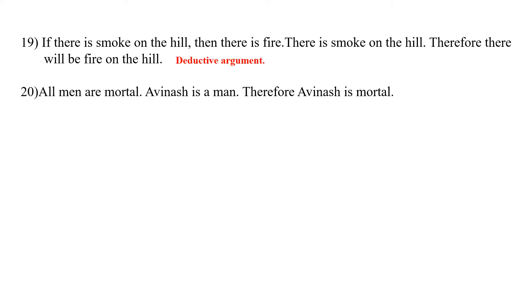Now we come to the twentieth. All men are mortal; Avinash is a man; therefore Avinash is mortal. The conclusion is implicitly present in the premises and the premises are also providing sufficient evidence for the conclusion to prove that Avinash is mortal. So it is of deductive type.